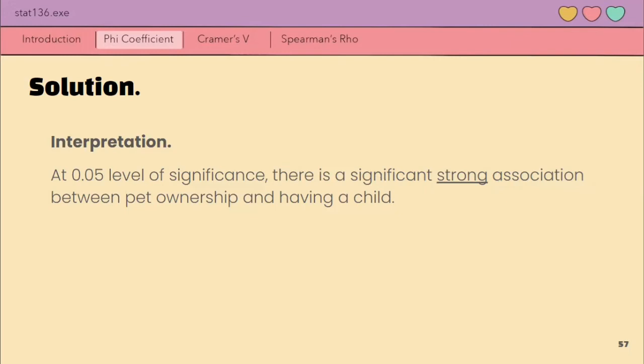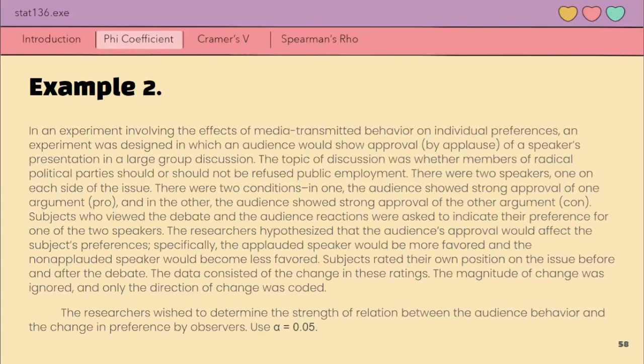Let's look at another example. In an experiment involving the effects of media-transmitted behavior on individual preferences, an experiment was designed in which an audience would show approval by applause of a speaker's presentation in large group discussion. The topic of discussion was whether members of radical political parties should or should not refuse public employment. There were two speakers, one on each side of the issue. There were two conditions.